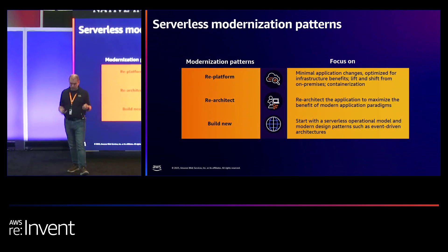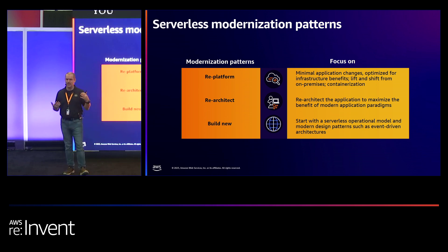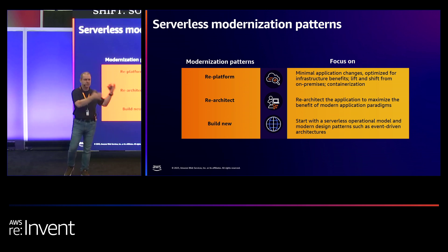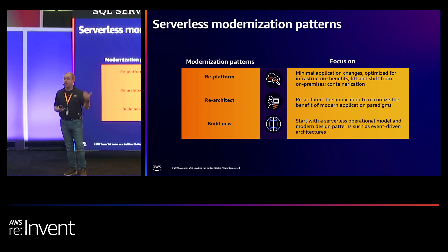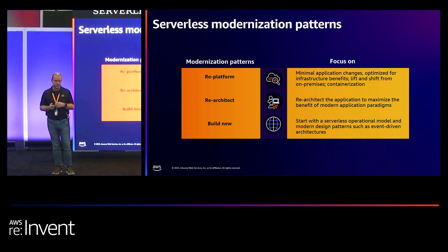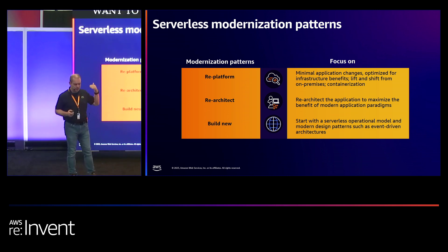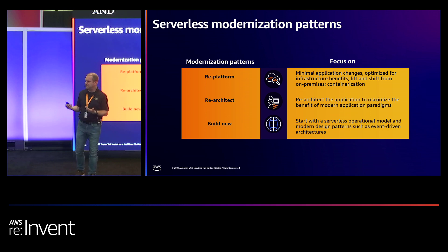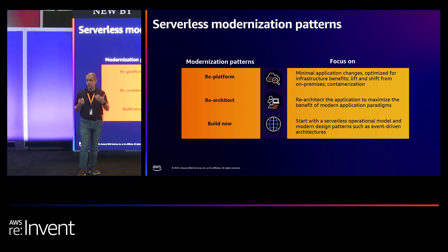Re-platform is a good start if you want to go past lift and shift. For example, if you have SQL Server on-prem, you can run that on RDS — so you don't have to worry about managing the underlying EC2 instance. If you have a container workload, you can run it on our serverless compute platform Fargate, so you don't have to manage EC2 instances. But I really want to go further into re-architecting the application to take full benefits of what cloud is really good at. And if you're building new, definitely start with a serverless approach first.